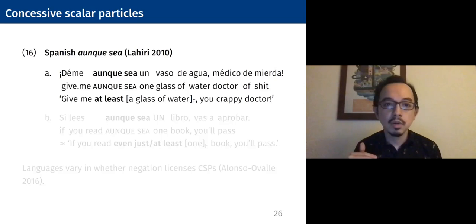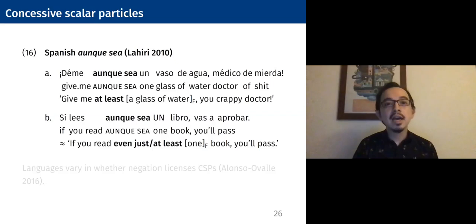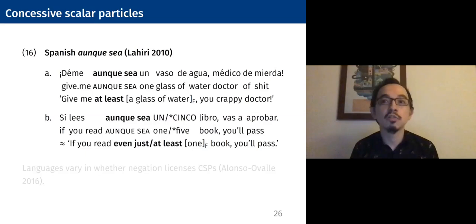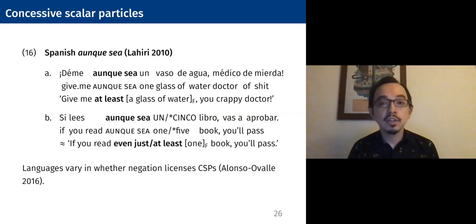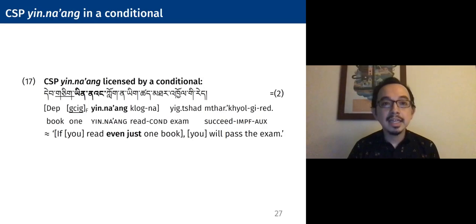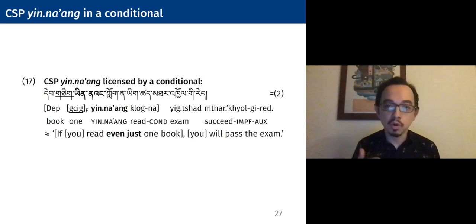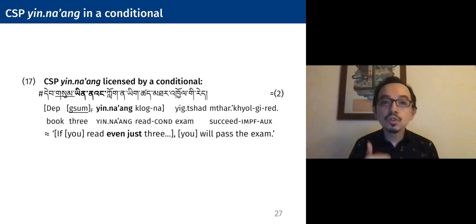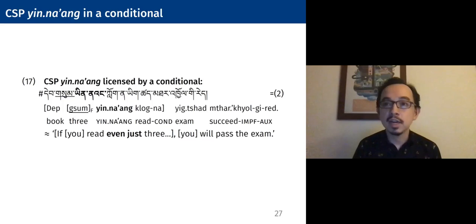In addition, languages vary in whether negation licenses this concessive scalar as well. So let's take a look at the facts for Tibetan. Yinang is licensed in a conditional — we saw this example before: 'If you read even just one book, you'll pass the exam.' If we change this to three, this is ungrammatical or infelicitous, in very parallel fashion to what we saw with the Spanish example. We can also license the use of yinang under negation. There's a competition, and you expect Tashi to place, but then you say 'Tashi didn't even get third place,' where first, second, and third place are given out — third place would be the easiest, the lowest pragmatically on the scale, the easiest to satisfy. You didn't even get third place. Taking out the negation here just makes this seem ungrammatical or infelicitous.